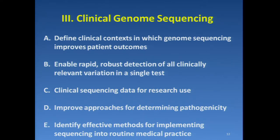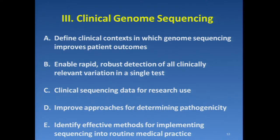The third big area was clinical genome sequencing. Topics that came up there were: to define clinical contexts in which genome sequencing improves patient outcomes; to enable rapid, robust detection of all clinically relevant variation in a single test; to enable the use of clinical sequencing data in research — the virtuous cycle idea again; to improve approaches for determining pathogenicity; and to identify effective methods for implementing sequencing into routine medical practice.